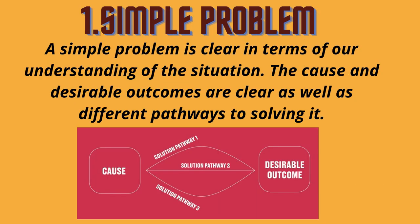Now let's discuss the types of problems in Design Thinking. The first one is simple problems. A simple problem is clear in terms of understanding of the situation. The cause and desirable outcomes are clear, as well as different pathways to solving it. For example, our community and the expectations of us are growing. In order to serve them properly, we need a reliable communication channel. The undesirable situation here is the lack of communication with the community. There are a number of solutions out there, like Mailchimp, that help you to do just that.